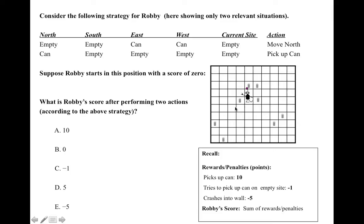Robbie starts here in this position, and the quiz asks what's Robbie's score after performing two actions according to the above strategy. So what you have to do is find the situation in the list of situations that corresponds to Robbie's current situation, do the action that's associated with that situation, and then look for the new situation in the list, do the move that's associated with that situation, and give what his resulting score would be.